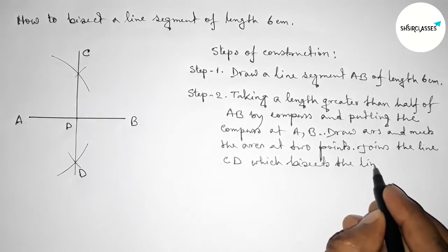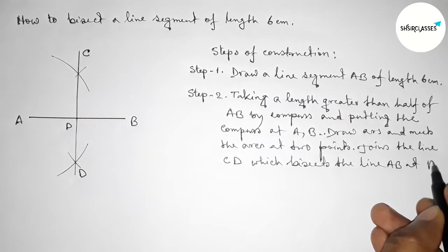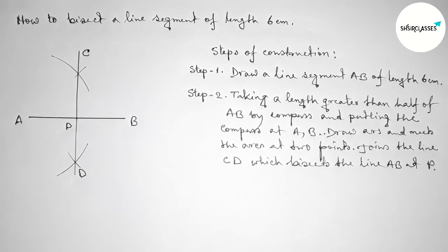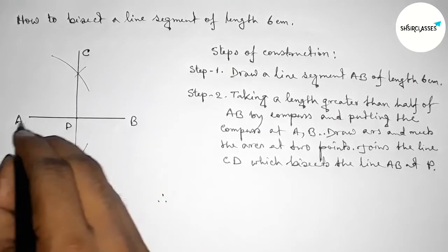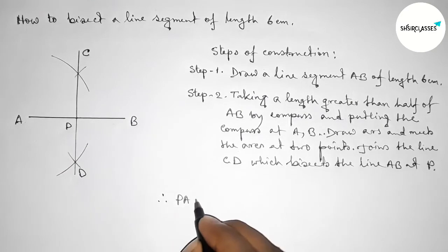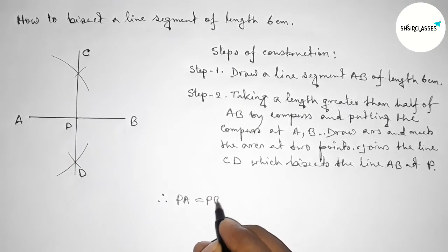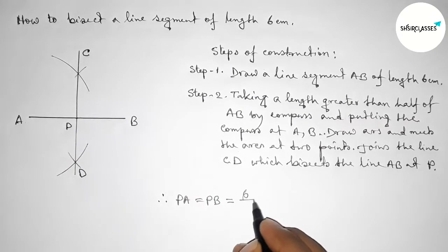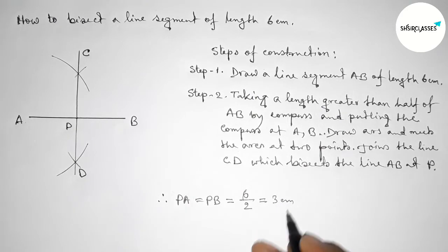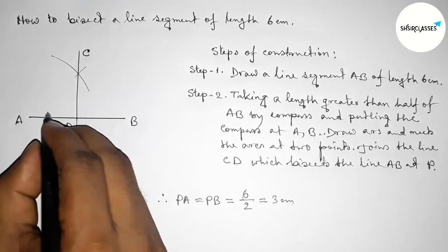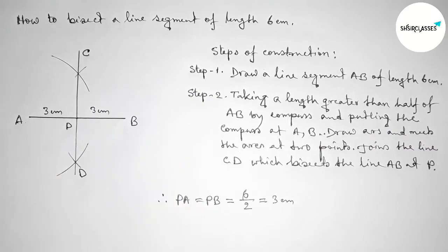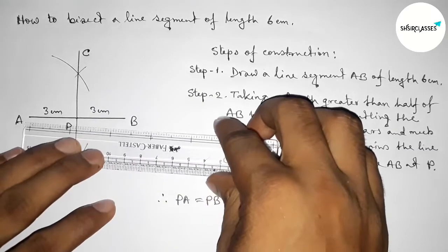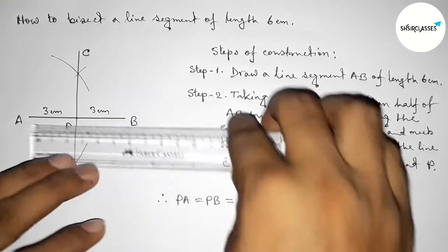Therefore, PA equals PB equals 6 divided by 2, which is 3 centimeters. So PA is 3 centimeters and PB is 3 centimeters.